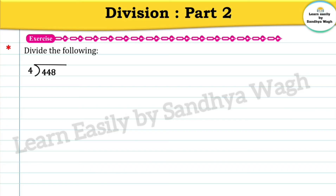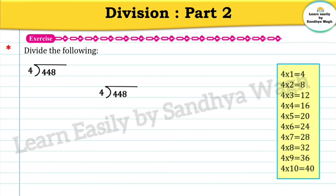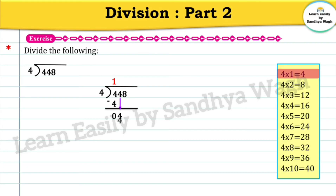Let's take the next example: 448 divided by 4. Here 448 is the dividend and 4 is the divisor. Let's divide the left most digit of the dividend, which is 4. 4 ones are 4, so we write 4 as the quotient. Now let's subtract 4 from 4, answer will be 0. Next, let's bring down this 4. Again 4 ones are 4, so we write 4 over here and 1 as the quotient. Let's subtract 4 from 4, answer will be 0.